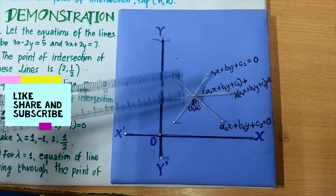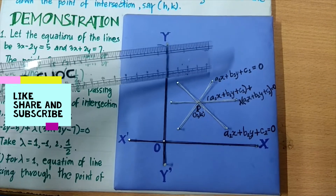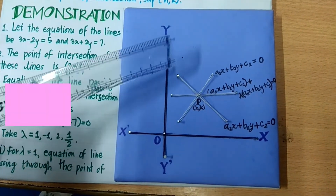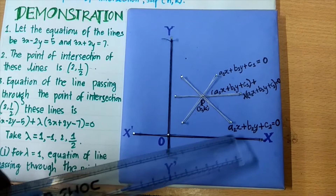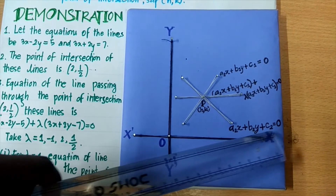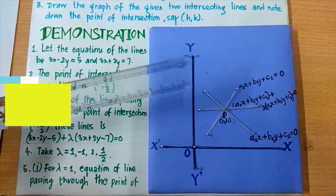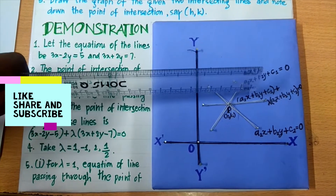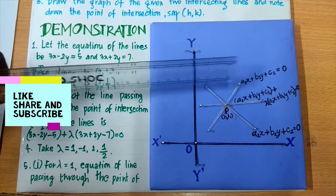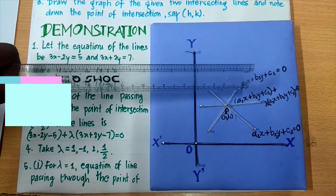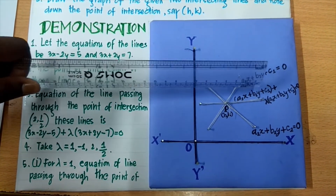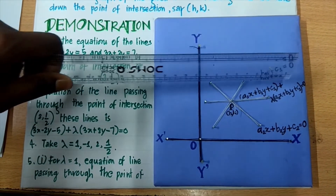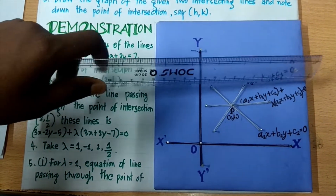The equation of this line is a1x plus b1y plus c1 equals to 0, and the equation of this line is a2x plus b2y plus c2 equals to 0. The line passing through the point of intersection is in the form a1x plus b1y plus c1 plus lambda into a2x plus b2y plus c2 equals to 0.